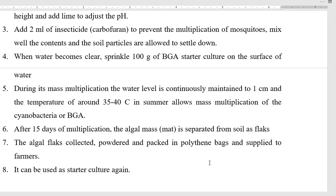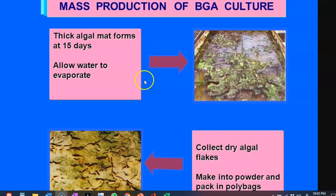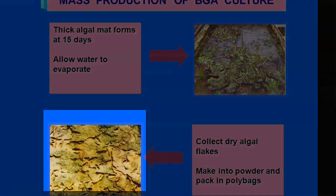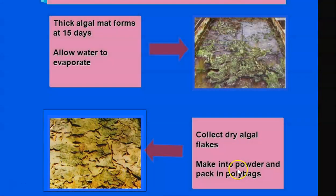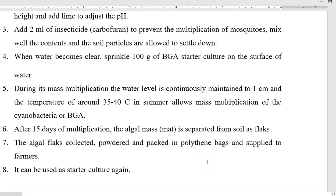After 15 days of multiplication, the algal mass is separated from the soil — this is referred to as flakes. After the 15 days of multiplication, when you allow the water to completely evaporate, they form into flakes. The algal flakes are collected, powdered, and packed in polythene bags.